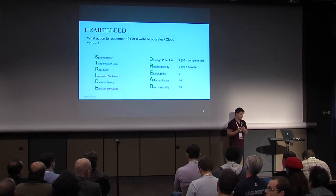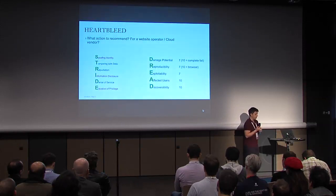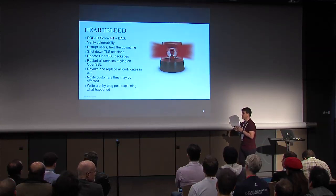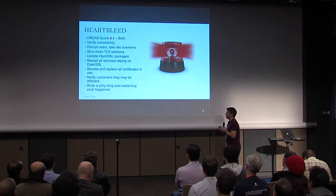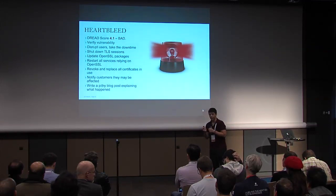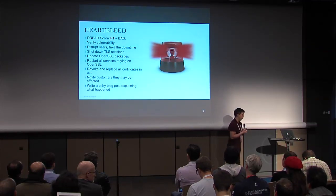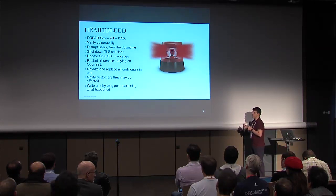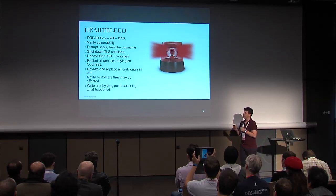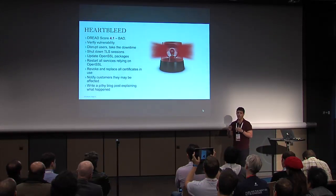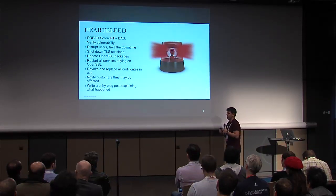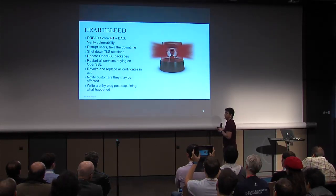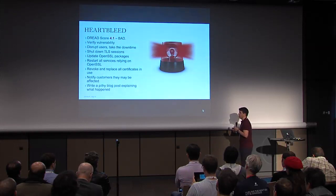Heartbleed was very easy to find, very easy to exploit, and happened on a pretty reliable basis, giving it a DREAD score of 4.1. It caused a lot of headaches — people had to replace all their certificates, upgrade their entire real estates, and ask themselves hard questions about what material they thought would be lost from their systems. It was a very bad vulnerability for a lot of people.